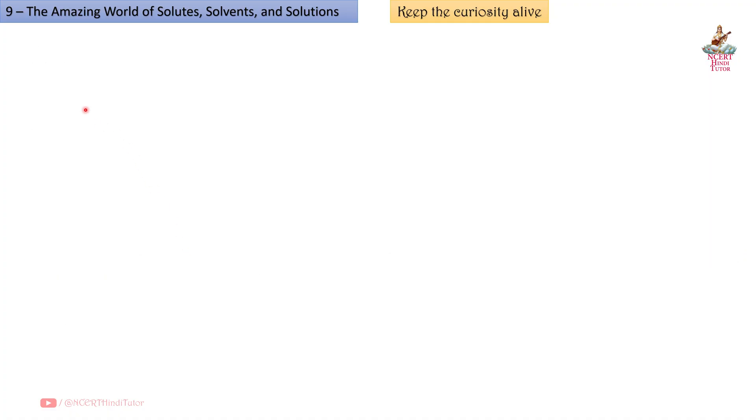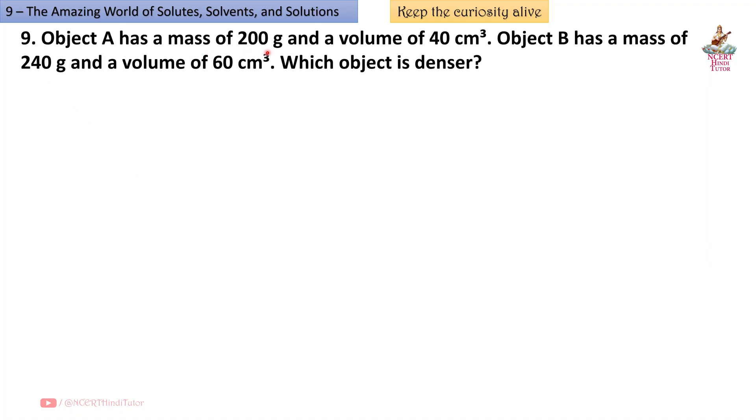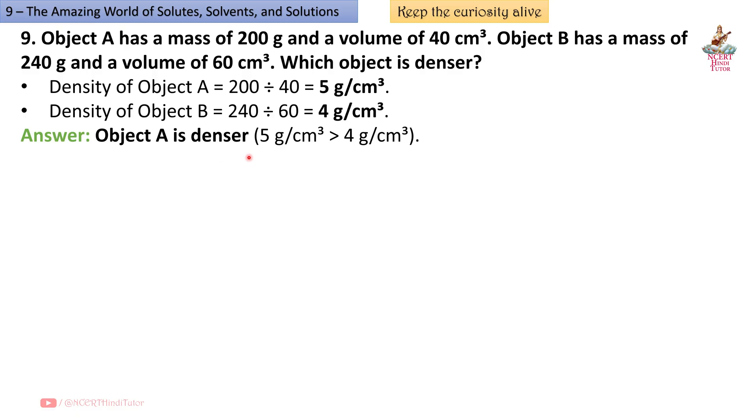Question 9: Object A has a mass of 200 g and a volume of 40 cm cube. Object B has a mass of 240 g and a volume of 60 cm cube. Which object is denser? So density of object A: 200 divided by 40 because density is equal to mass divided by volume, so we get 5 g per cm cube. Density of object B: 240 divided by 60 equals 4 g per cm cube. So object A is denser. 5 g per cm cube is greater than 4 g per cm cube.